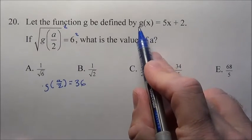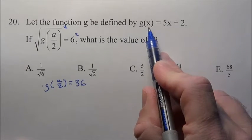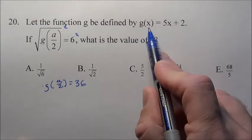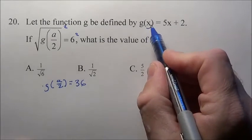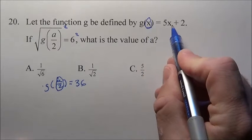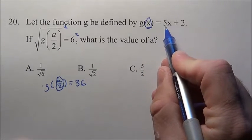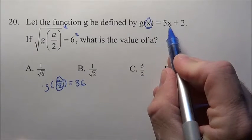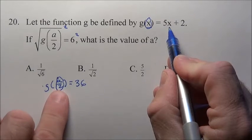Now I've got the function just as it wants. It says g of whatever you have equals 5 times whatever is right here plus 2. So what do we have right here? We have a/2. So I'm just going to replace wherever there's an x in the equation with a/2.